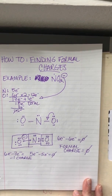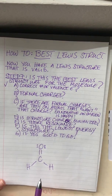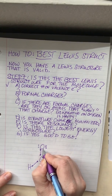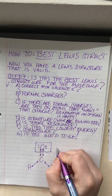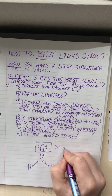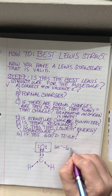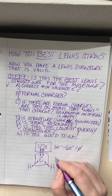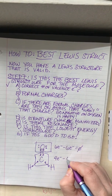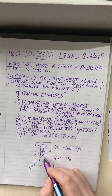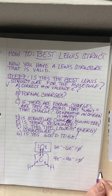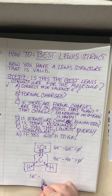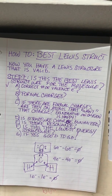Going back to our H₂CO molecule, we can evaluate it for formal charge. Writing in individual electrons and sectioning off atoms: oxygen came with six electrons and has six here — no formal charge. Carbon came with four electrons and has four around it — formal charge zero. Hydrogen came with one electron each and has one electron here — so they also have no formal charge.